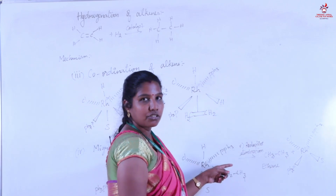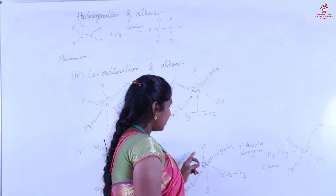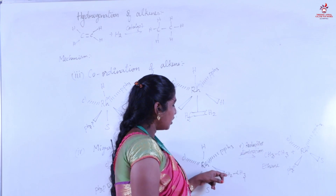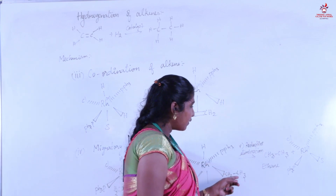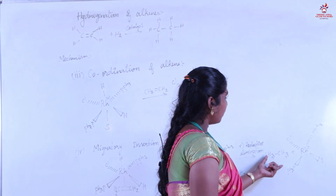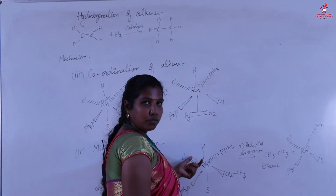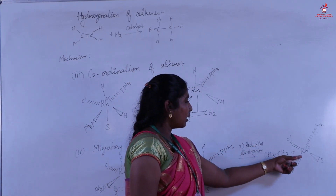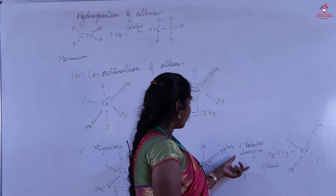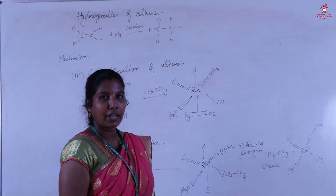The fifth step is reductive elimination. Here another hydrogen is moved to this single bond CH₂ compound, and the single bond CH₂ compound moves outside. The ethane compound is formed — CH₃–CH₃, ethane. Next, the solvent is here and the rhodium complex is converted to four-coordination number. The rhodium complex is reformed in its plus one oxidation state. From this reaction, ethane is formed. Thank you.